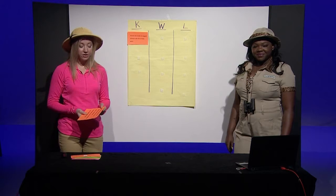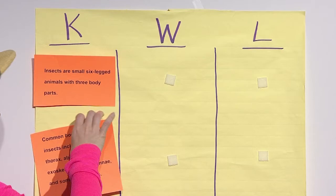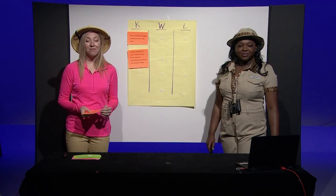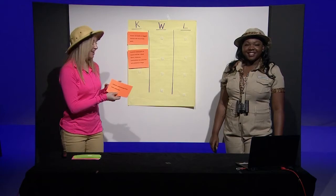We also know that the common body parts of insects include a head, a thorax, an abdomen, exoskeleton, two antennae, and sometimes wings. We also know that insects communicate using their antennae. We added those facts to the chart.